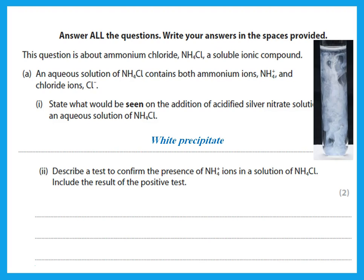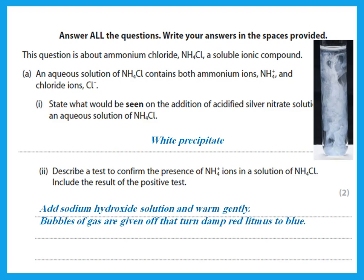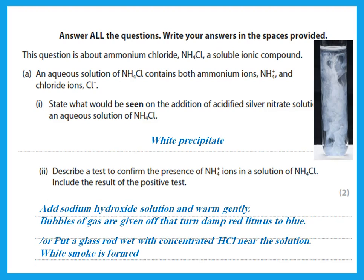The test for ammonium ions: add sodium hydroxide solution, warm gently, and bubbles of gas are given off that turn damp red litmus to blue, because it gives off ammonia gas. Another test is with concentrated HCl — if you put a glass rod wet with concentrated HCl near the solution, it forms white smoke because ammonium chloride is formed.